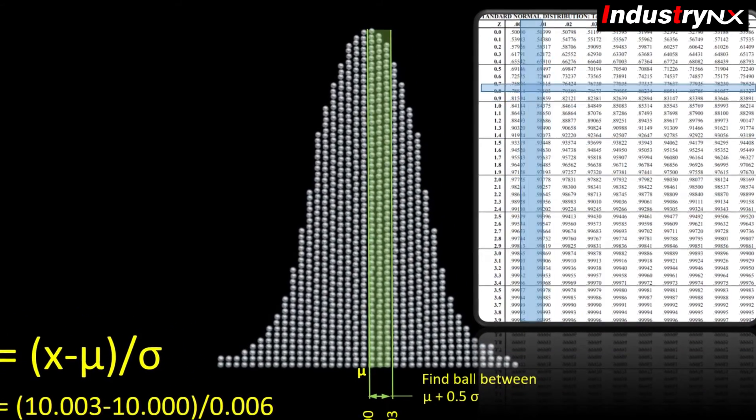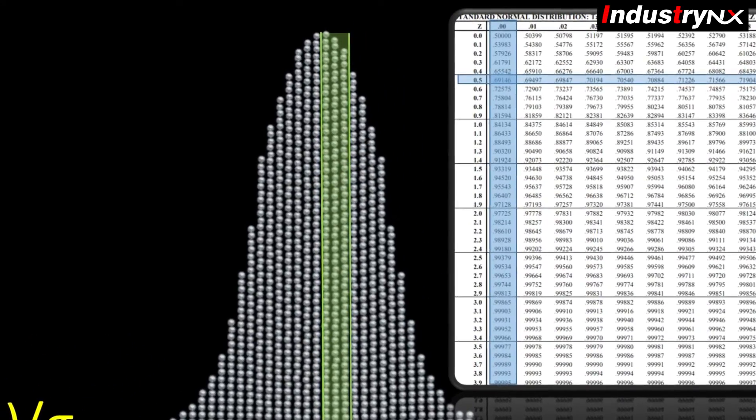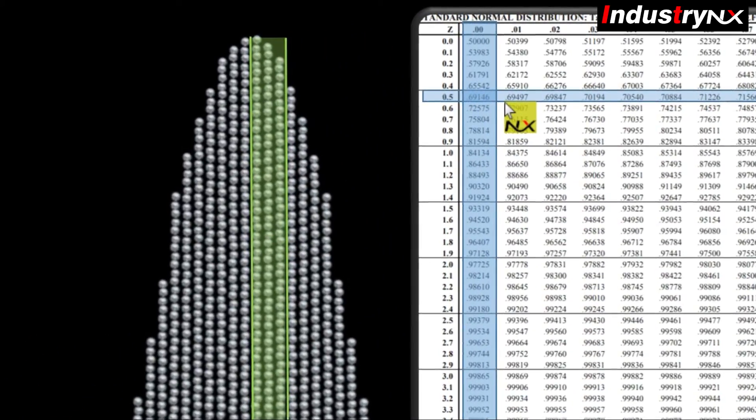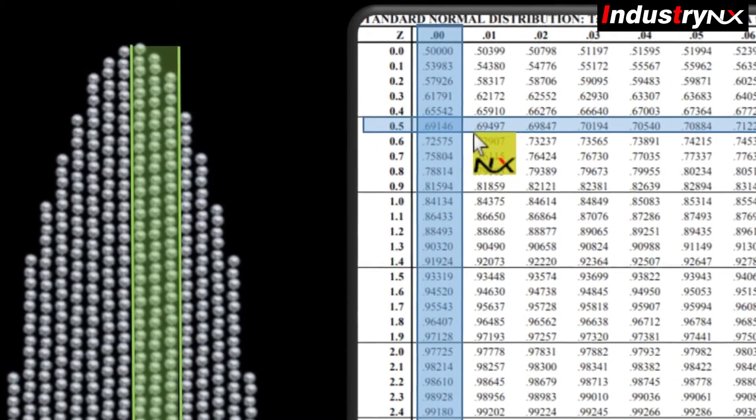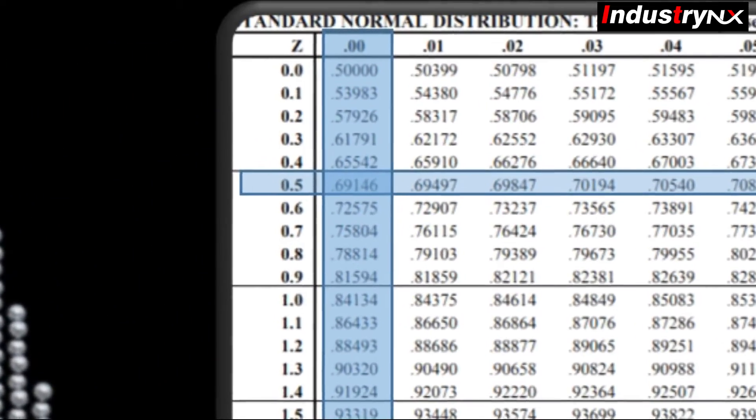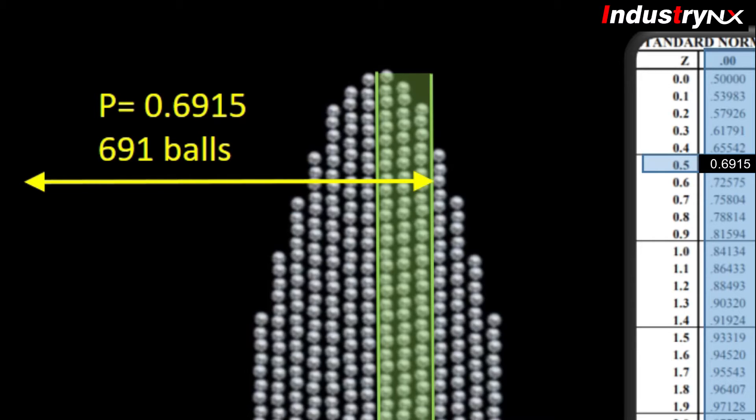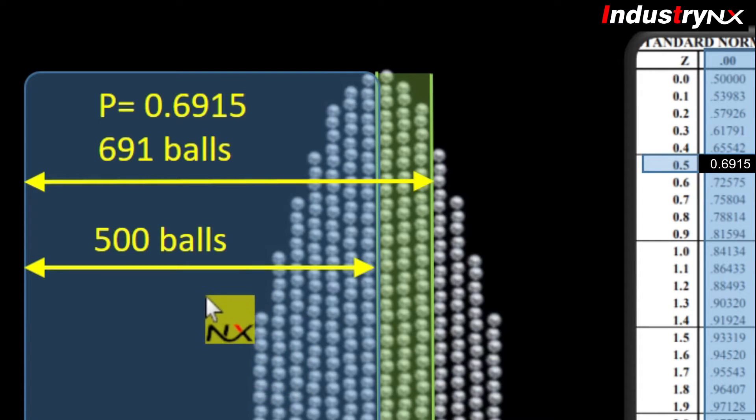Let us find our p-value for z-score 0.50. Hence total area to the left hand side is 0.6915, on left hand side means 691 balls. As we know that 50% balls are on the left hand side, that is 500 balls. You will find this also in z-score table.